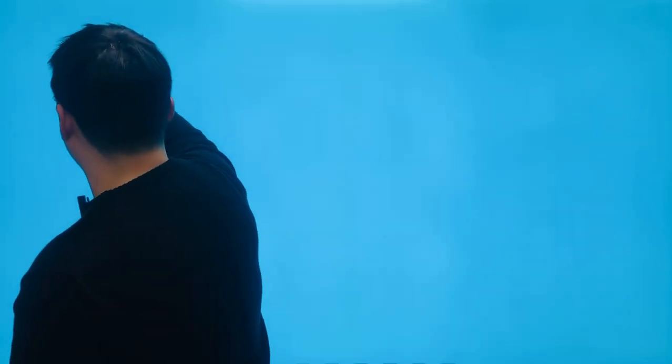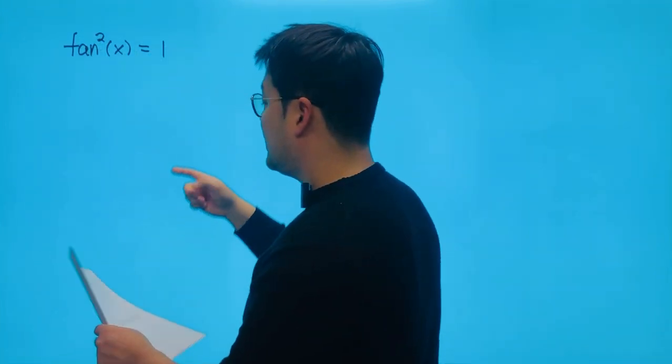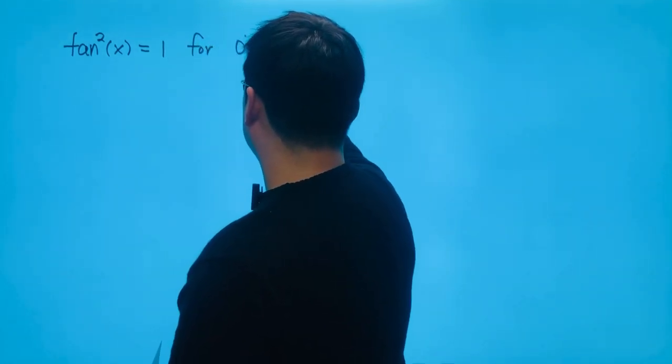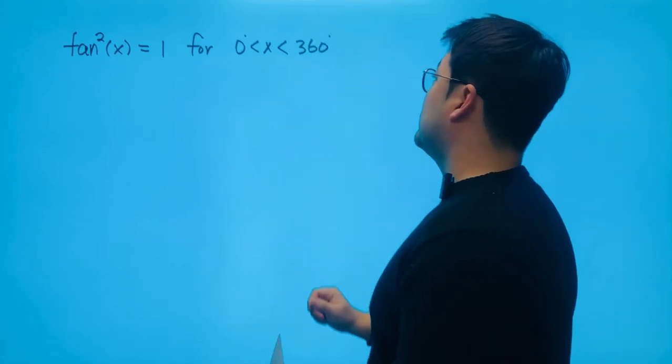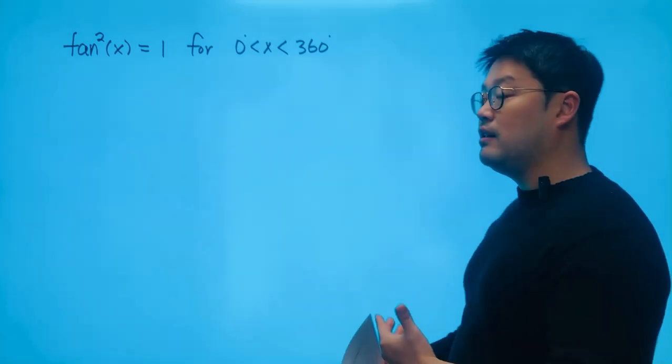Tangent squared x equals 1 for some x values. Those are nice values of x. In fact, very nice values of x, just one full rotation from the initial arm, and we just happen to get tangent squared equals 1.